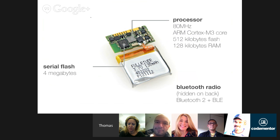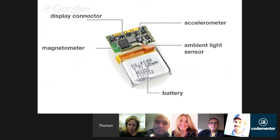Pebble has four megabytes of flash storage on which we store the apps developers build. As you can see in this picture, the battery actually takes up most of the space inside your Pebble — a very important aspect. The rest of the board has the magnetometer used for the compass, the ambient light sensor to detect when we need to turn the backlight on, and the accelerometer.